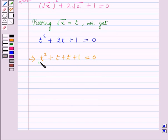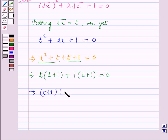Combining the first two terms and the last two terms, we get t(t+1) + 1(t+1) = 0. This implies (t+1)(t+1) = 0.